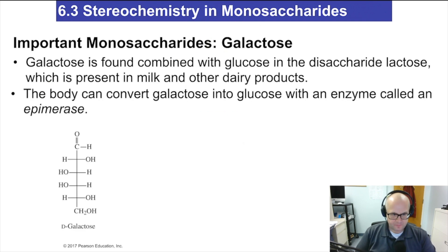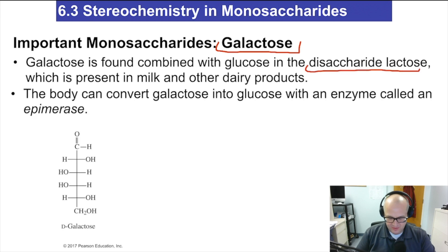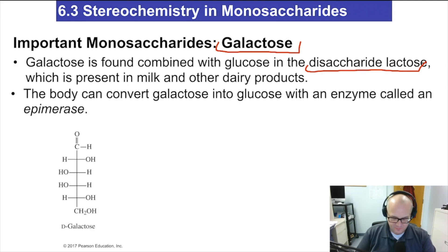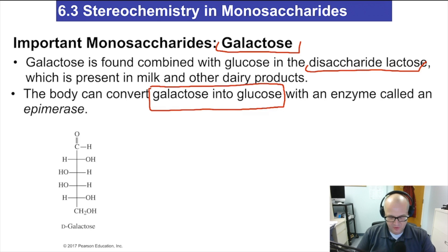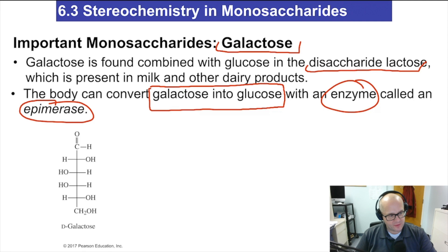Galactose is another kind of sugar. Galactose is combined with glucose in the disaccharide lactose — so lactose is glucose and galactose bonded together, that's the disaccharide lactose. A fun fact: the body can convert galactose into glucose with an enzyme called epimerase. It can just convert one to the other, so if you're eating galactose it will eventually become glucose in your body.